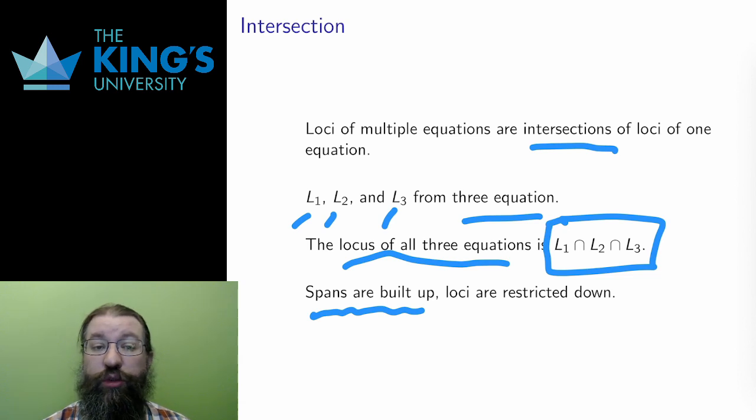Loci are built from equations which are restrictions. They start with everything and ask what happens when a rule is imposed. What points remain? The more equations or rules imposed, the fewer points remain. They are built from the top down, getting smaller and smaller with more and more equations.